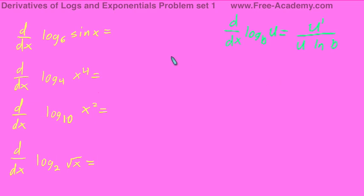Hello. Today we're doing the first of four problem sets of the derivatives of logs and exponentials presented by www.free-academy.com. In this lecture, we're going to be doing derivatives of the form log base b of u, with the derivative being u prime divided by u multiplied by ln of b. These are pretty simple once you have the formula. All you need to do is identify what the b and what the u is, take the derivative of u, and put everything together.